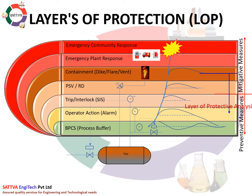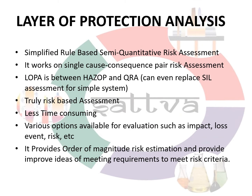There are a few basic requirements for meeting LOPA — layers must be independent, reliable and auditable. LOPA is a simplified rule-based semi-quantitative risk assessment; it works on a single cause-consequence pair risk assessment. LOPA sits between HAZOP and QRA, or can even replace SIL assessment for simple systems.